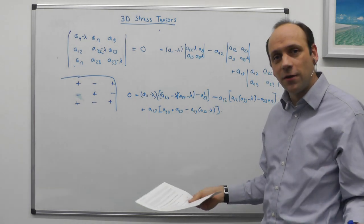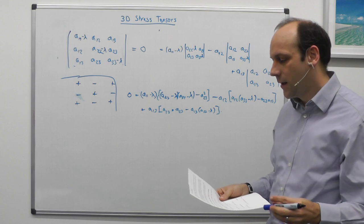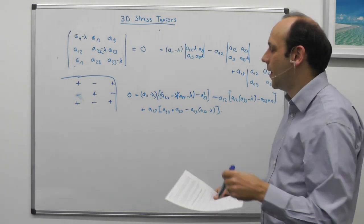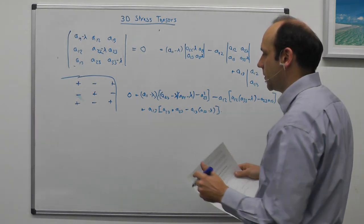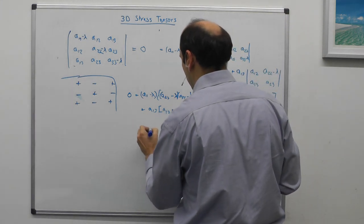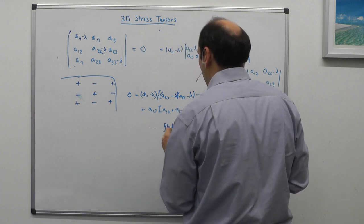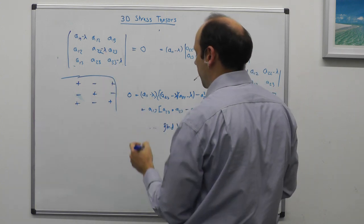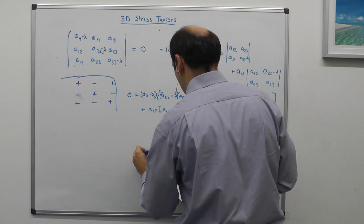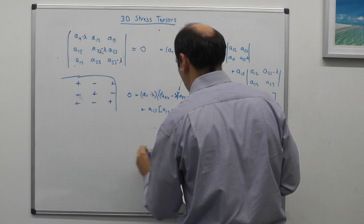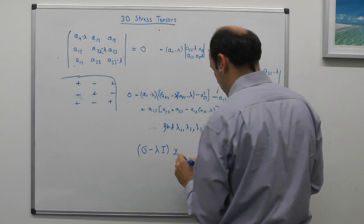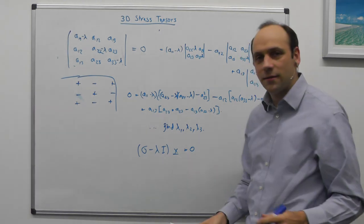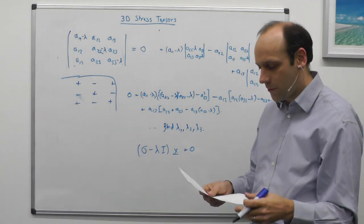In general there's no formula for solving cubics — you need to find the first root by inspection, then substitute that root in to reduce to a quadratic. Once we've solved the cubic, we'll have three values of lambda: lambda 1, lambda 2, lambda 3. We then solve (sigma minus lambda I) times x equals zero to get three simultaneous equations for the components of each eigenvector x1, x2, x3.